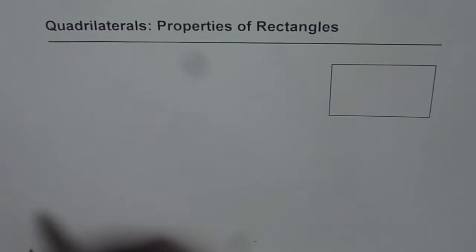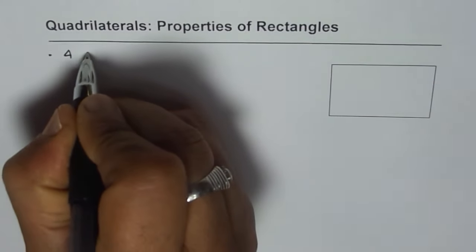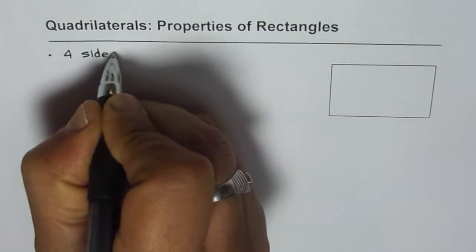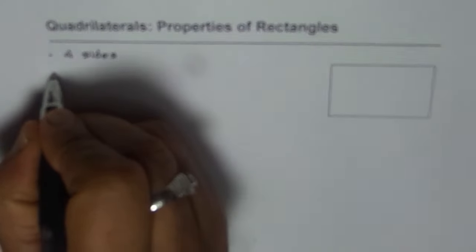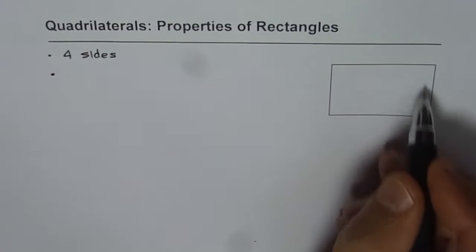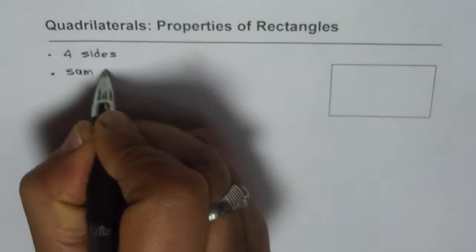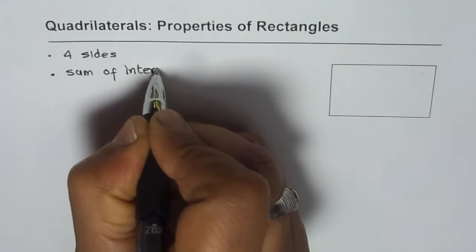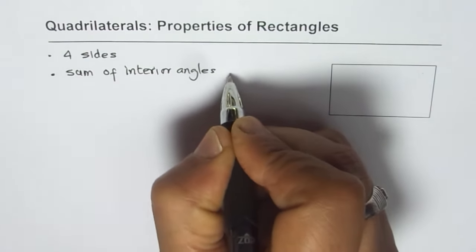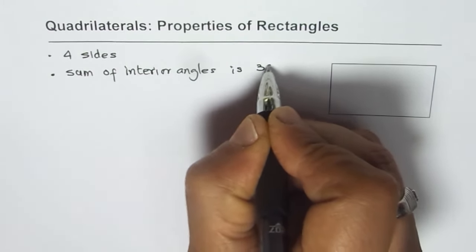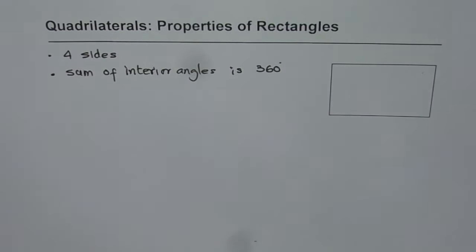It is a quadrilateral. That means it has four sides. Since it is a quadrilateral, another thing this means is that the sum of interior angles is 360 degrees. Now these are characteristics of any quadrilateral.